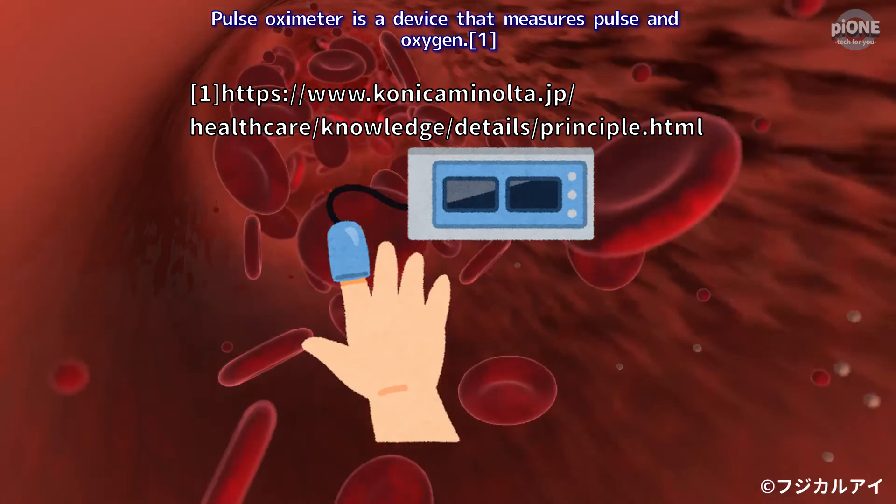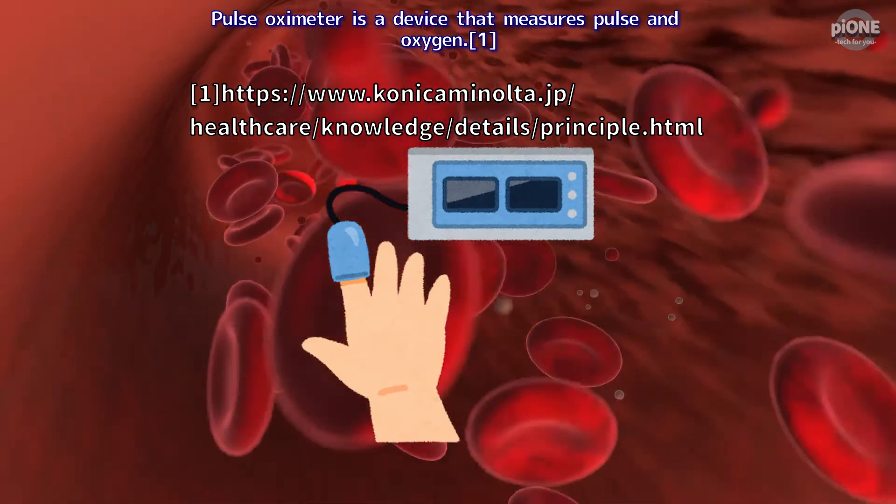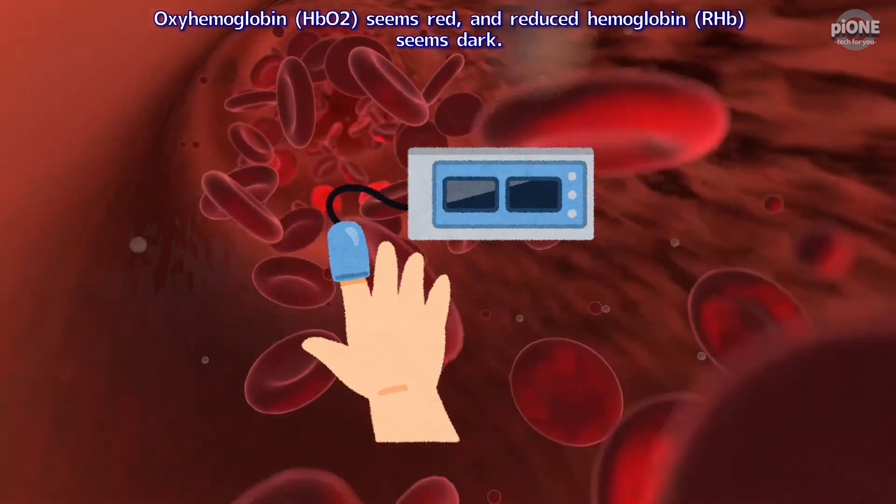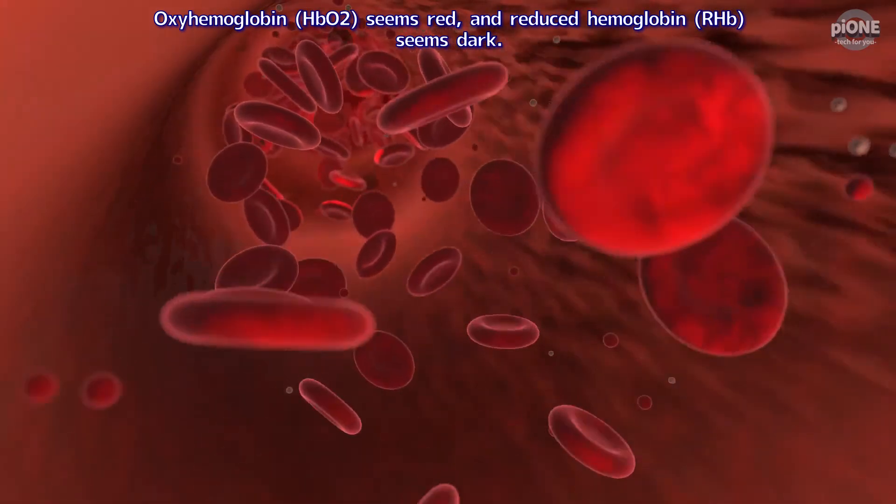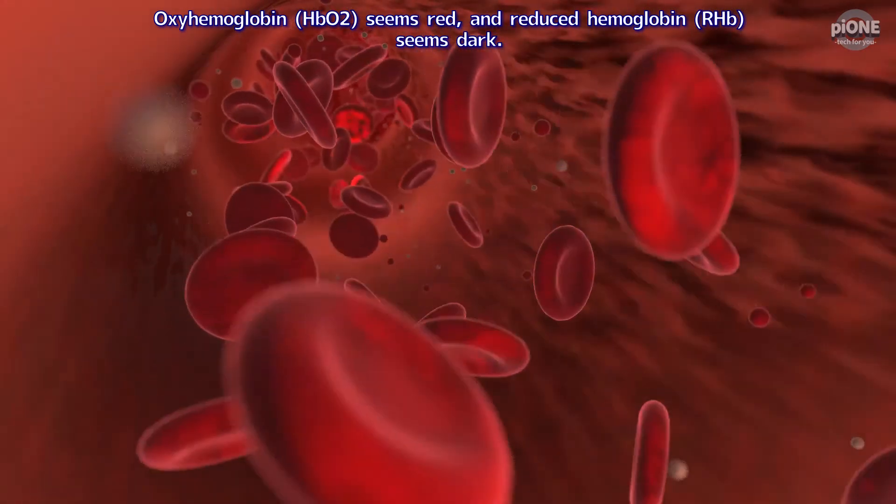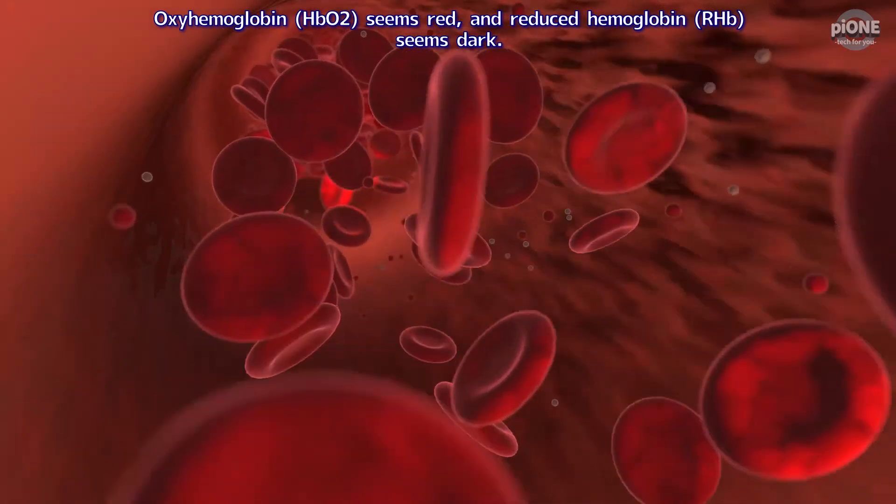Pulse Oximeter is a device that measures pulse and oxygen. Oxyhemoglobin seems red, and reduced hemoglobin seems dark.